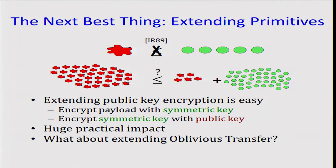We know that extending public key encryption is easy. This proceeds by just encrypting the payload with the symmetric key, and then you encrypt the symmetric key with the public key. So you only do one public key operation. This has had a huge practical impact on our everyday use of encryption.